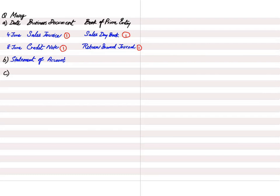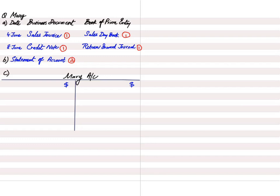In part C, we need to make the ledger account of Mary in Kim's books. Since we are Kim, we need to make Mary's account. Mary is our customer, so we are making a customer's account. On 1st June, Mary owes Kim $680 — this is an asset for us, a trade receivable. Mary is the customer and the customer is basically an asset for the business.